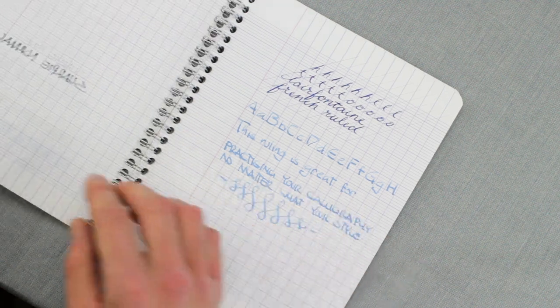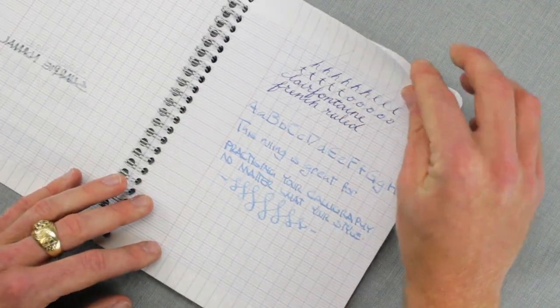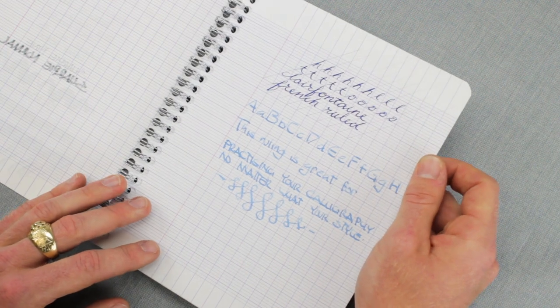Because this paper is so nice and it handles ink so well, especially if you're using dip pens for your calligraphy practice, this is a great option for you. The paper makes ruling guides really easy and you're not gonna have any bleeding or show-through or feathering.